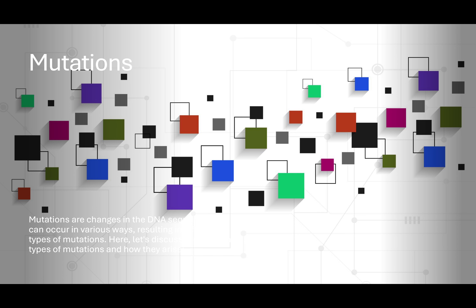So that's roughly what we're talking about. Mutations are generally changes in the genetic sequence — changes in the DNA sequence. There are various things that can result in different changes in the DNA sequence, and that will result in some amount of mutation.